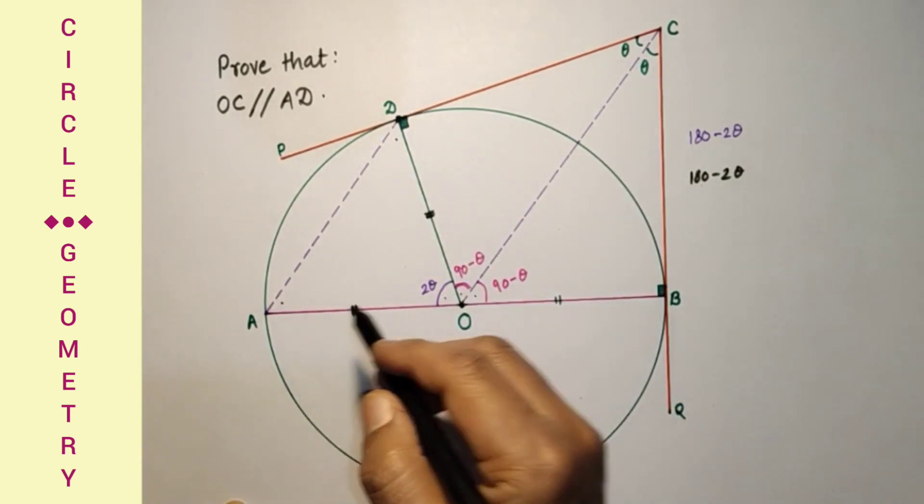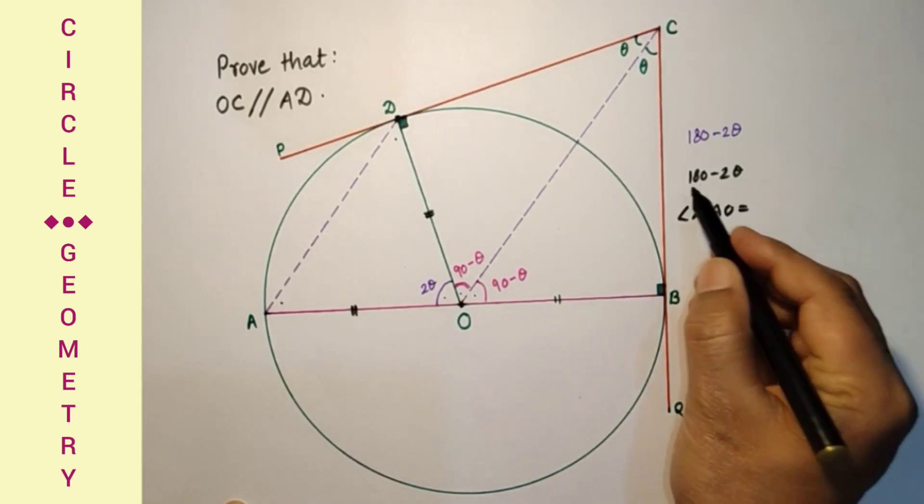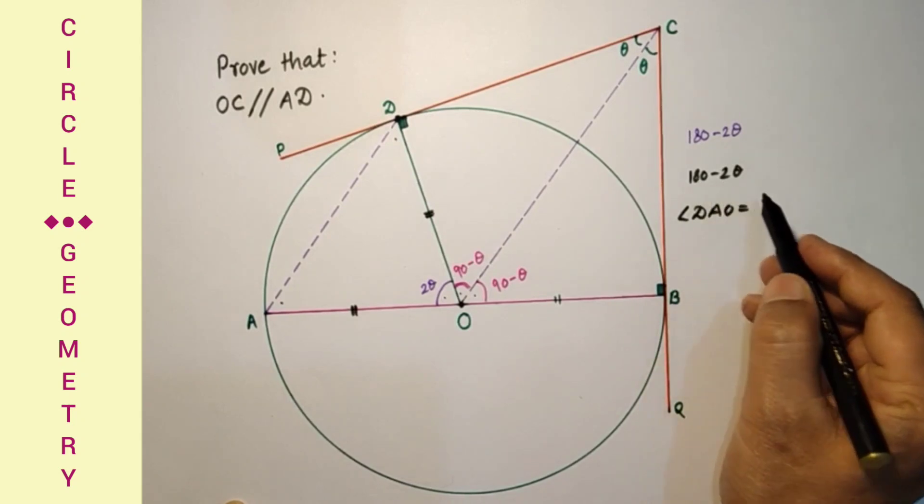To get this angle, angle DAO is equal to half of 180 minus 2 theta, which is 90 minus theta.